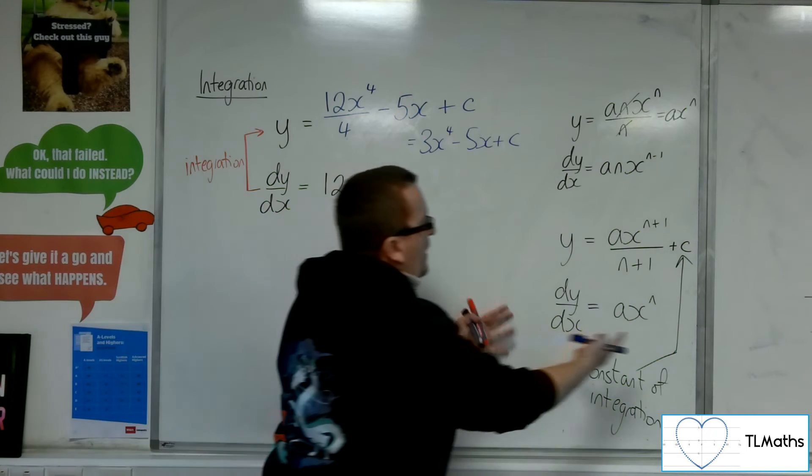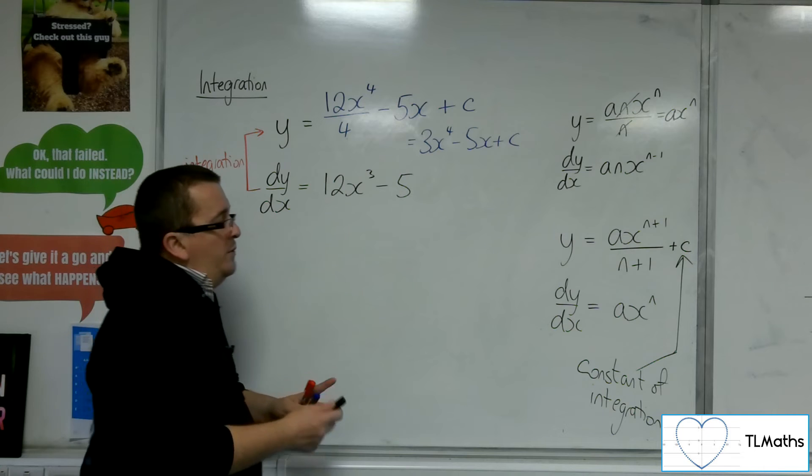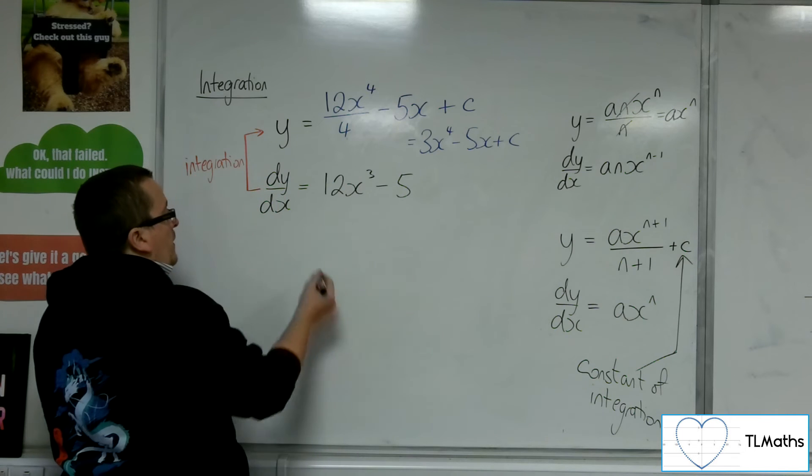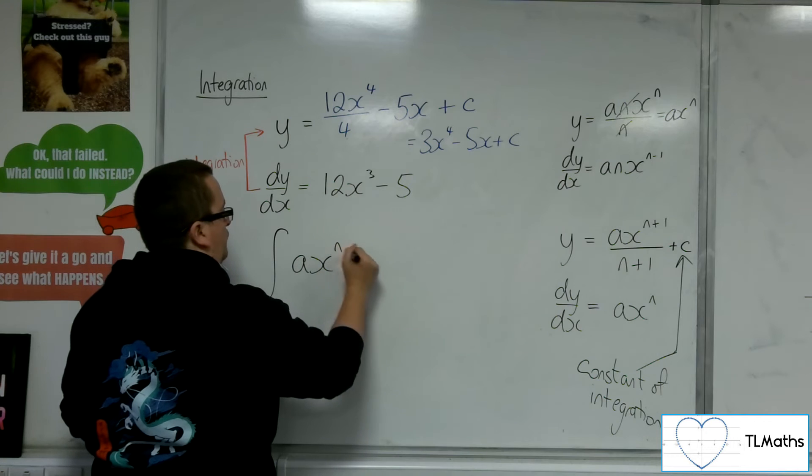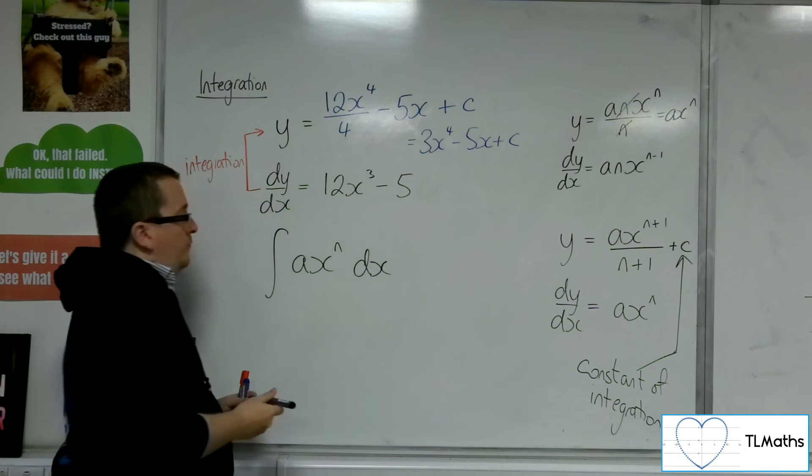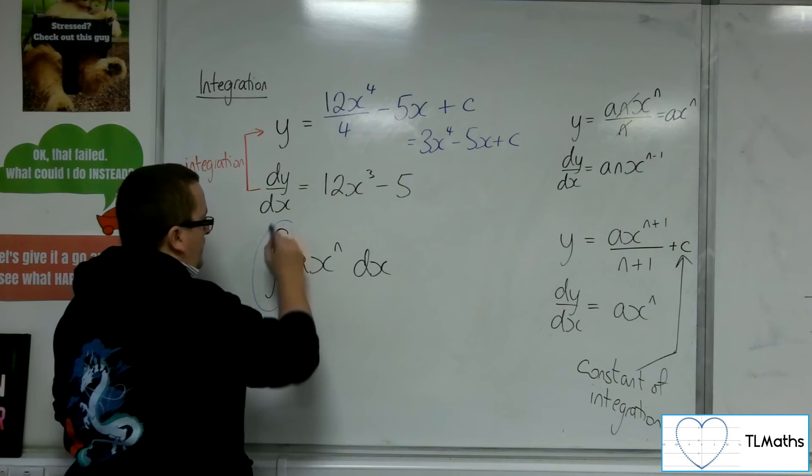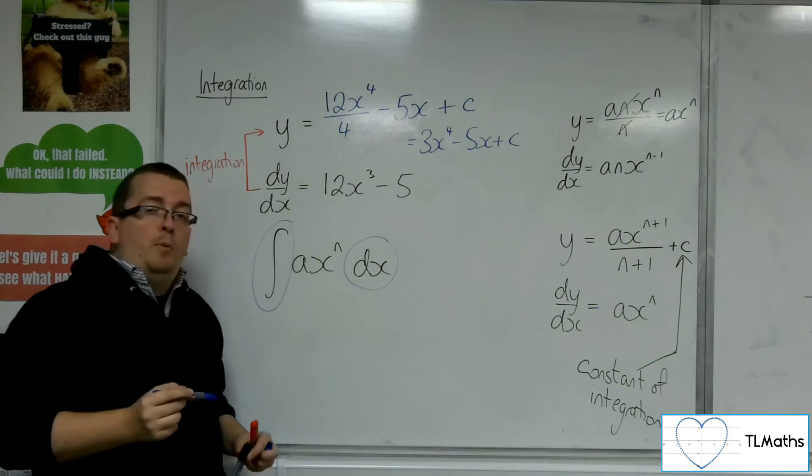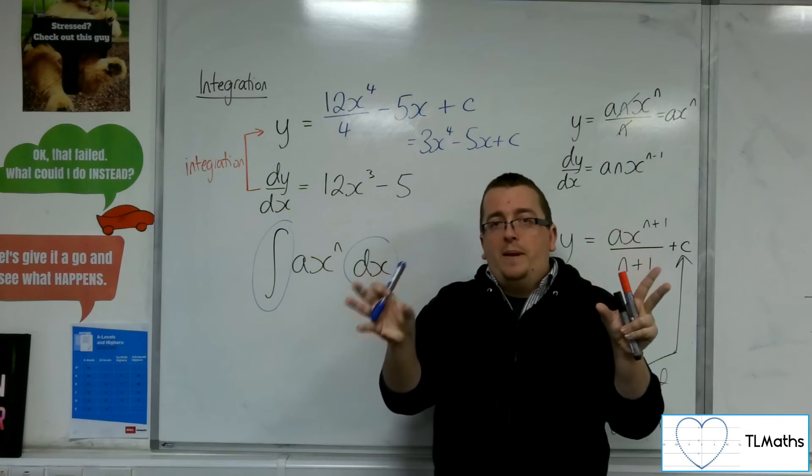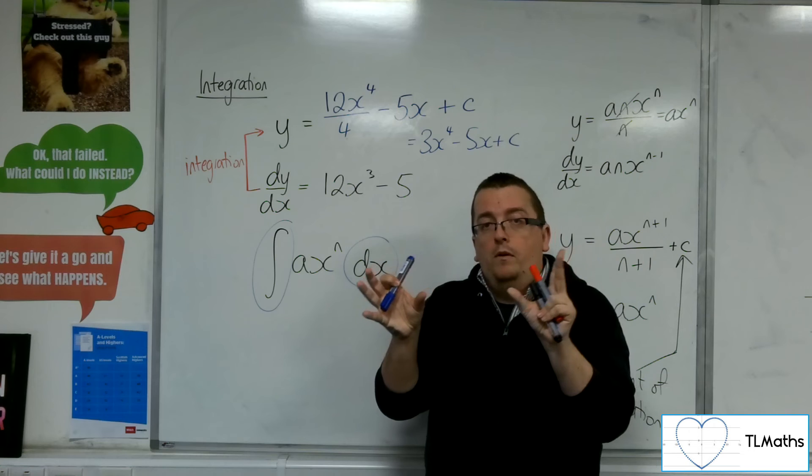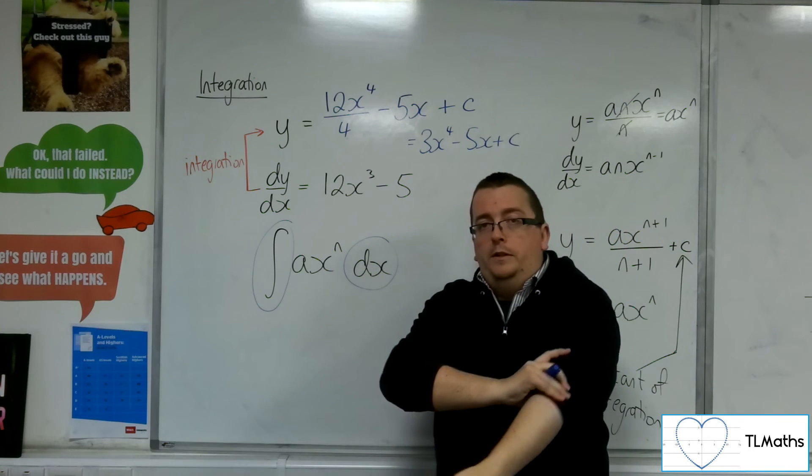Starting from dy by dx. Now, that's not the only notation that we use. We also use a notation that looks like this. OK? Now, these two pieces here are like bookends. OK? They are there and have to be there, both of them. You can't just start ignoring the dx, for example.